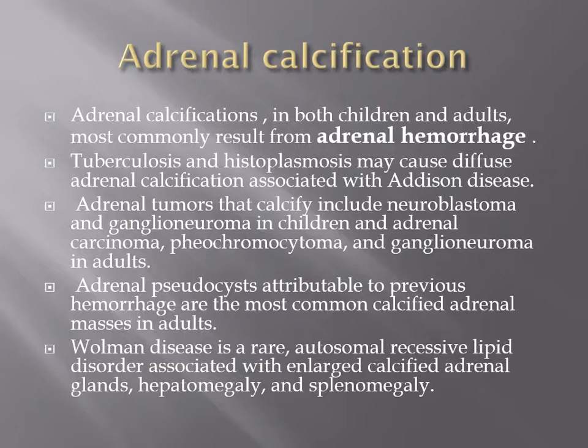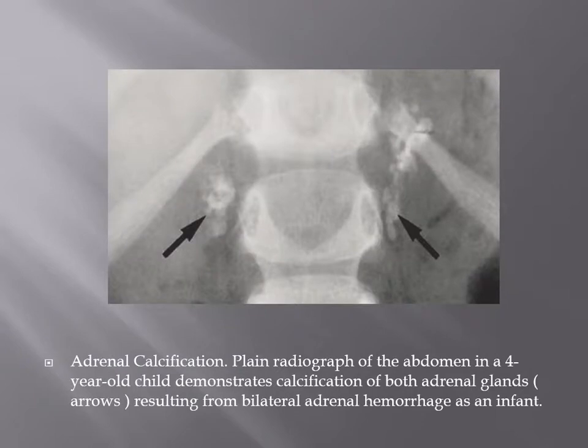Adrenal calcification occurs in both children and adults; the most common cause is adrenal hemorrhage. Tuberculosis and histoplasmosis are other causes associated with Addison's disease. Adrenal tumors that may calcify include neuroblastoma, ganglioneuroma, and pheochromocytoma. An adrenal pseudocyst attributed to previous hemorrhage is the most common cause of calcified adrenal mass in adults. Wolman's disease is an autosomal recessive lipid disorder associated with bilateral adrenal enlargement and calcification with hepatosplenomegaly.